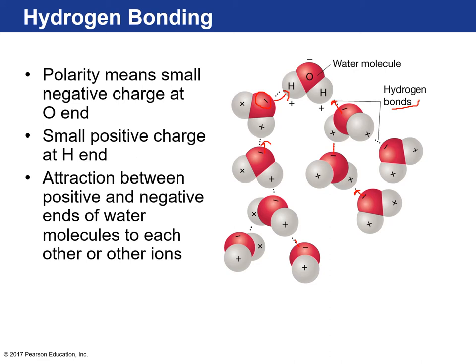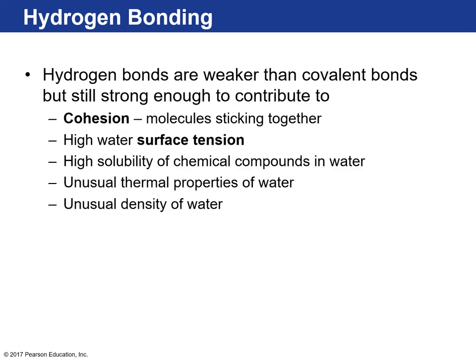Hydrogen bonds are weaker than the covalent bonds between hydrogen and oxygen. The covalent bond — where they share electrons — is really strong and very hard to break; you'd have to add a lot of heat and energy to break it. Hydrogen bonds are much weaker — it takes less energy to disrupt the links between individual water molecules. Hydrogen bonding contributes to many of water's properties.